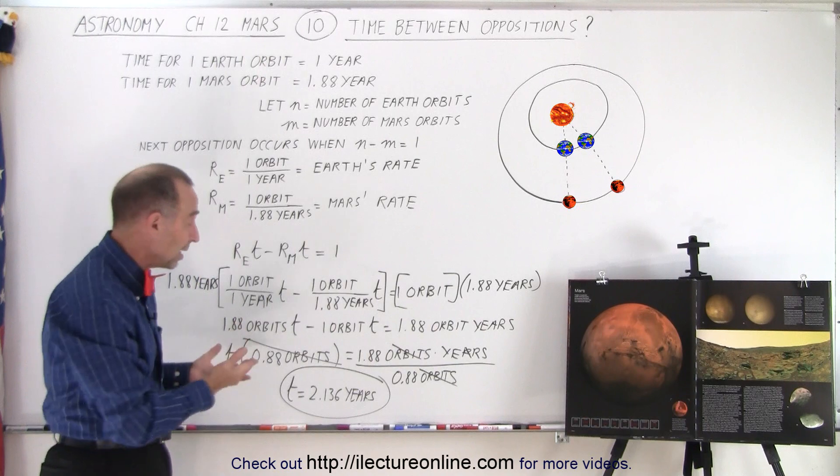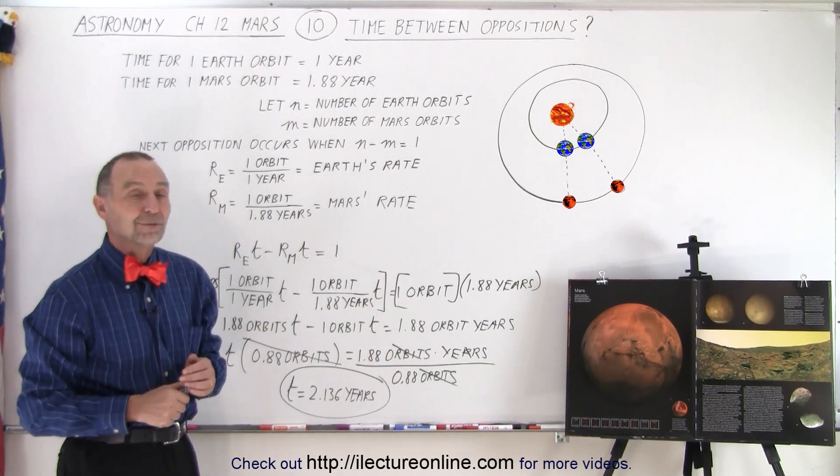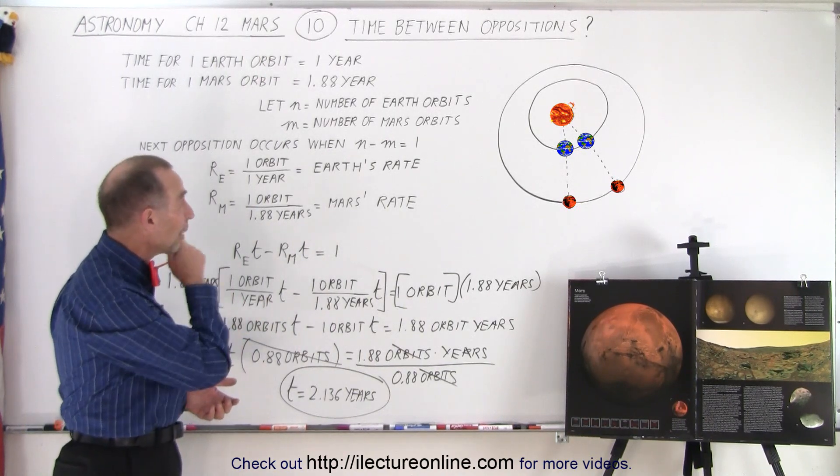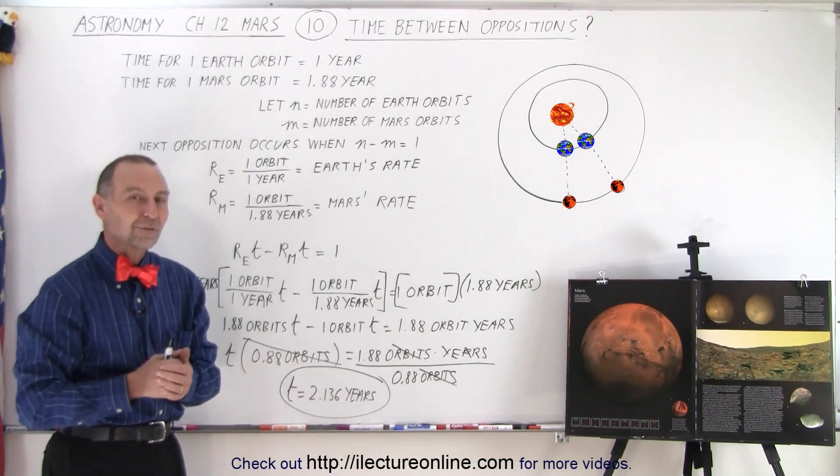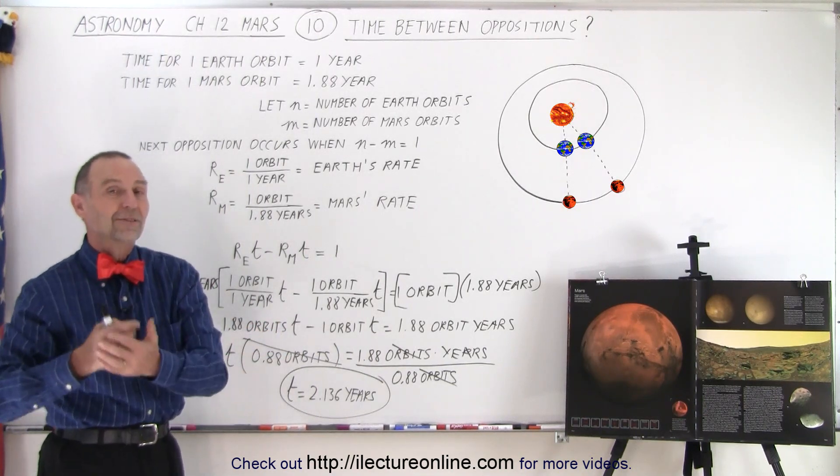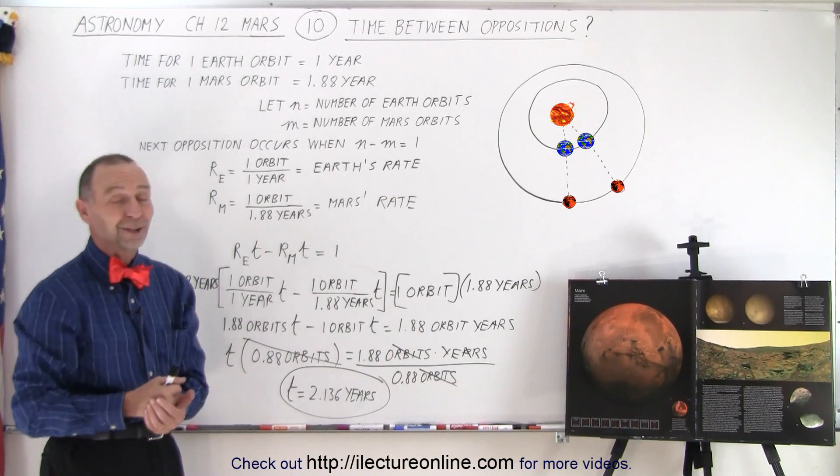And Mars will then be the brightest it will be over the next two years. And that's how we can tell and that's how we can figure out how much time there is between the opposition of Mars from one opposition to the next opposition. And that is how it's done.